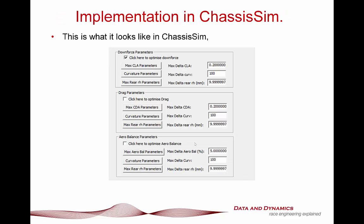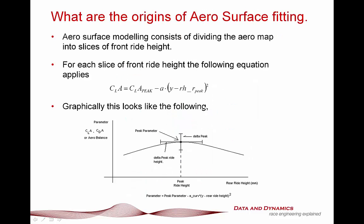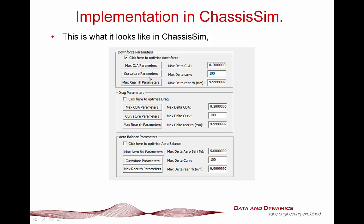How do we implement this in ChassisSim? We're going to walk through a practical example very shortly. When you open up the ChassisSim Aero Modeling Toolbox and go to optimize the aero map, these are the major things you're going to play with. With your max CLA parameters, you specify the max CLA as a function of front right-height throughout the right-height envelope. The max delta is the search space you're looking for. The curvature parameters define how tightly and how much variation you want in the aero map — you specify that as a function of front right-height with a delta to look in.